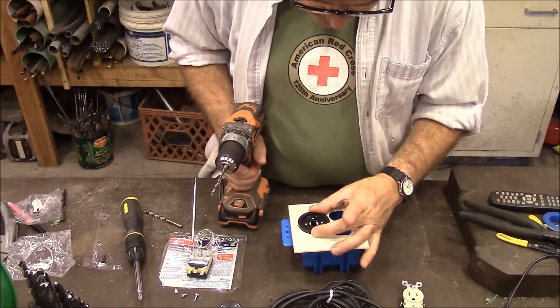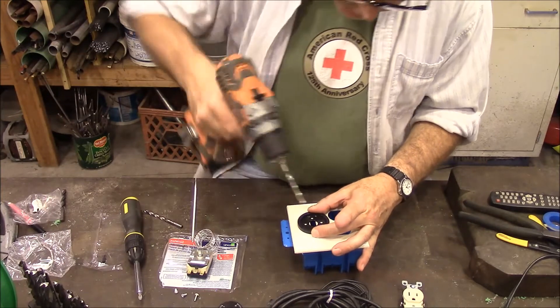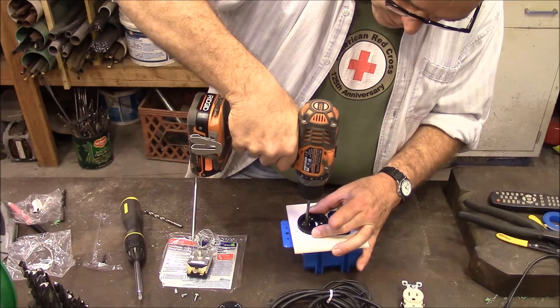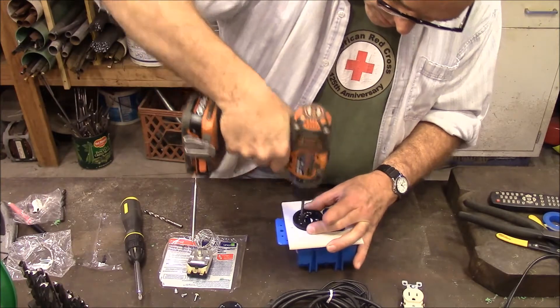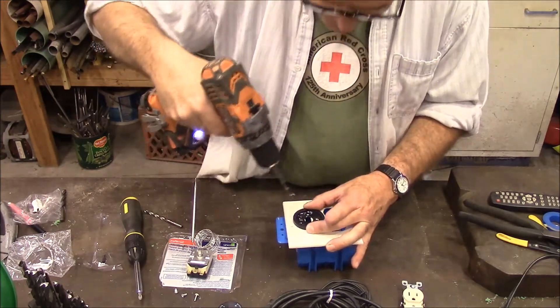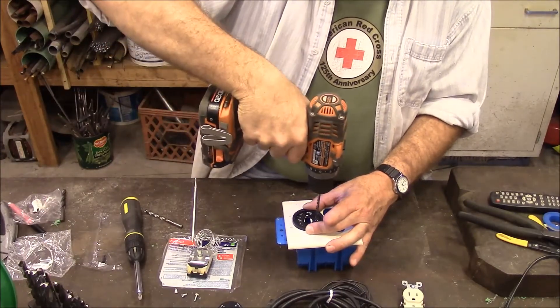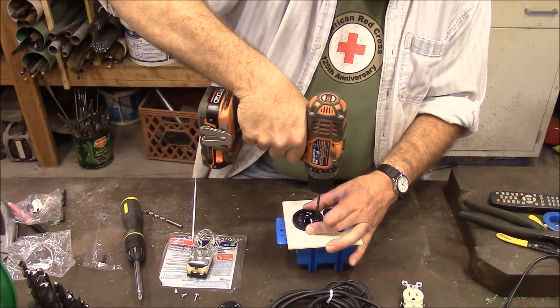We'll just use this plate as a template to show us where to drill our holes. Now this is a vinyl plate and they're hard to break. If you use the hard plastic ones, sometimes when you drill in them you got to go really slow or you'll break it.